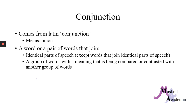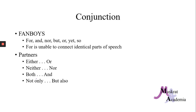Conjunction is our next part of speech. It comes from the Latin conjunctio. It means union, which makes sense because it's bringing together two parts — identical parts of speech, or a group of words with a meaning that is being compared or contrasted with another group of words. Which, again, is as clear as mud, so let's get to some examples.